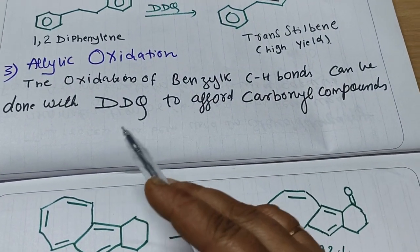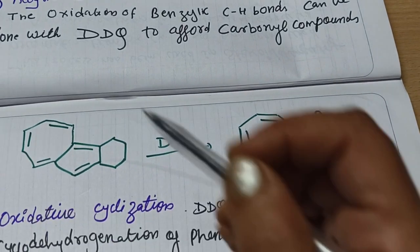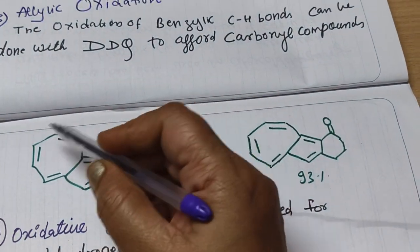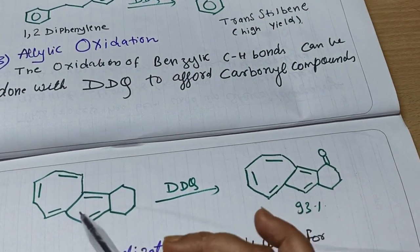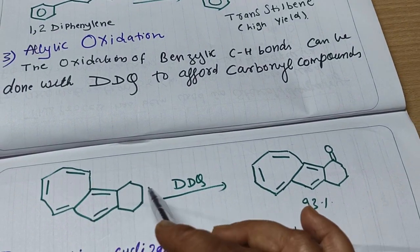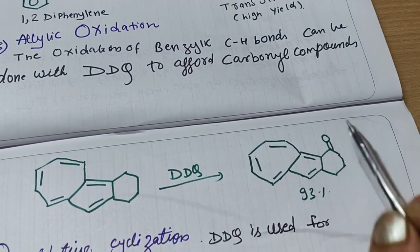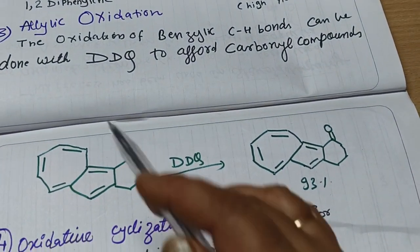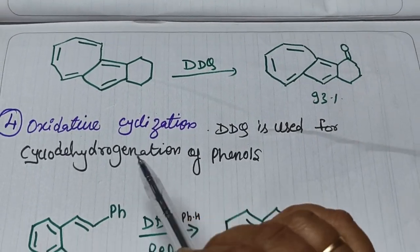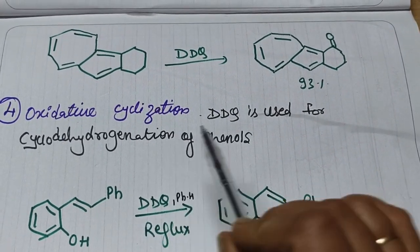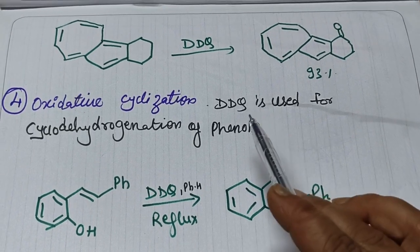The next application is allylic oxidation. The oxidation of benzylic C-H bonds can be done with DDQ to afford the carbonyl compound. When oxidizing the benzylic C-H bond, a carbonyl group is added at that position.